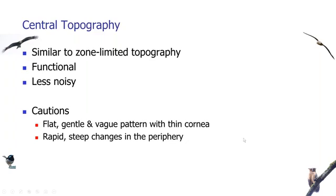However, there are some cautions. First, if you see a flat, gentle, vague pattern as I showed you just now with thin cornea, be very suspicious. You may want to take a good history from the patient and go on to do a full corneal tomography. Secondly, if you look at the periphery and see rapid steep changes, it's not a full cone, but you may want to go on to do a full corneal tomography because the cone may be a bit more paracentral and may not be picked up by this relatively smaller size central corneal tomography.